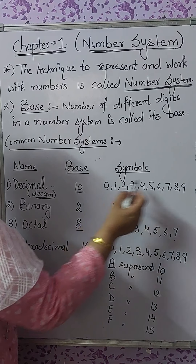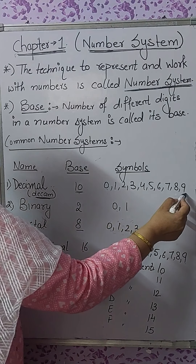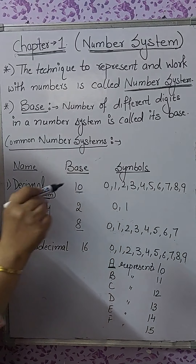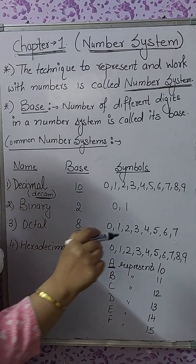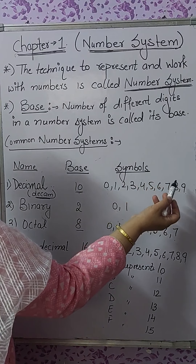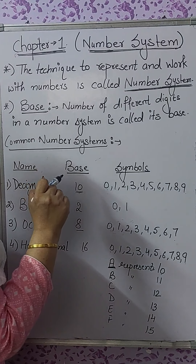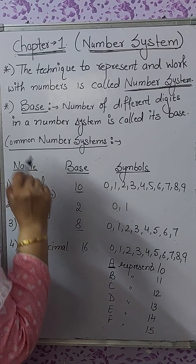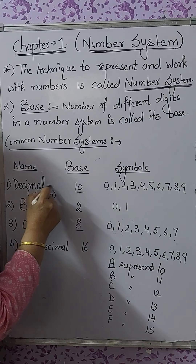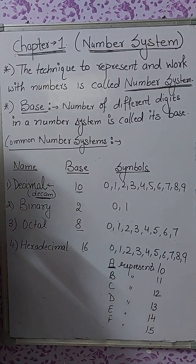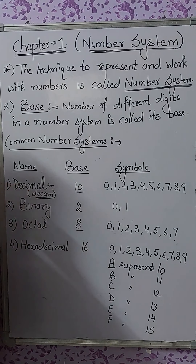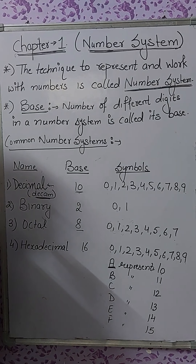Those 10 digits are 0 to 9. After 9, there is no different digit. If you write 10, that is a combination of 1 and 0. That is why its name is decimal — 'decum' means 10. And it is a positional number system.